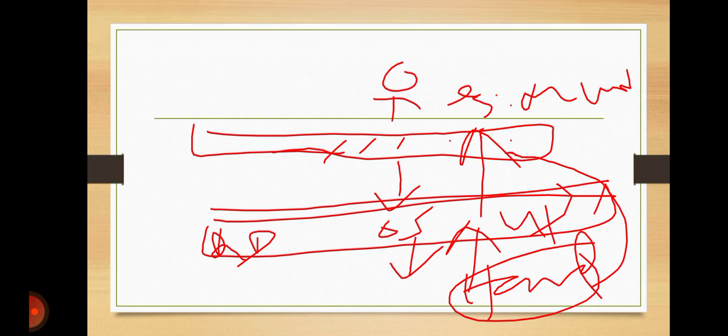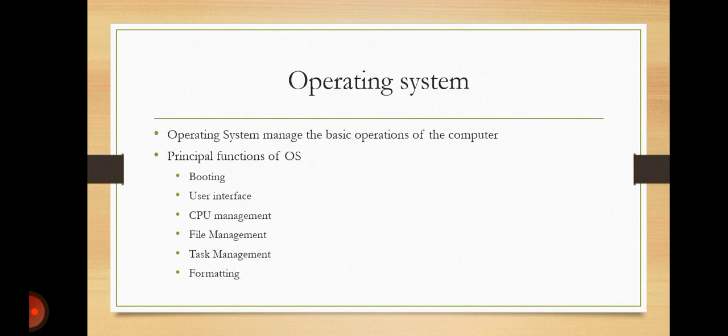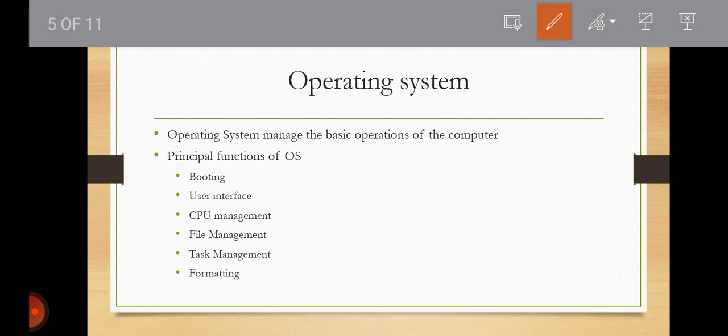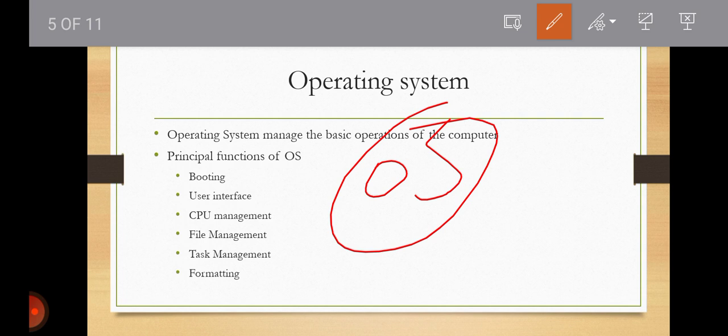Let us look at the operating system in detail. The operating system, written in short as OS, is also called a software platform. It consists of a master system of programs that manage the basic operations of a computer.